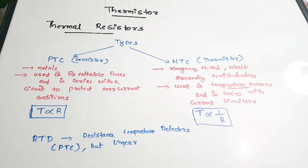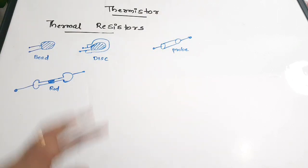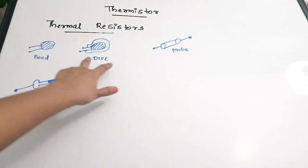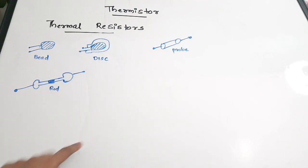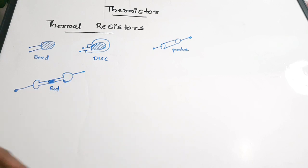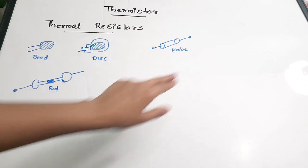Next we are going to see the various structures or shapes of thermistors. They come in bead-shaped, disc-shaped, probe-shaped, and rod-shaped forms. To all these shapes, there are two leads connected. These are temperature-dependent resistors — that is the only difference between normal resistors and thermistors, and they come in various shapes.